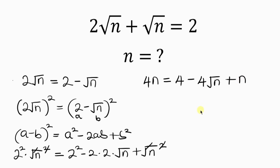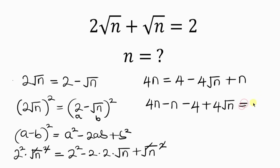Our next step is to move everything to the left hand side. As n crosses to the left it becomes minus n, as 4 crosses to the left it becomes minus 4, and as negative 4 root n crosses to the left it becomes plus 4 root n, all equal to 0. Simplifying: 4n minus n is 3n, so we have 3n minus 4 plus 4 root n equals 0.